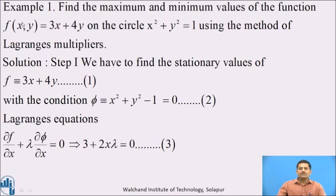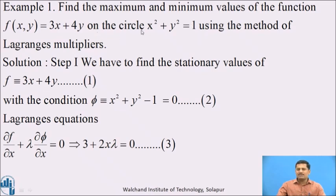Let us consider the first example: find the maximum and minimum values of the function f(x, y) = 3x + 4y on the circle x² + y² = 1 using the method of Lagrange's multipliers. In step number 1, the given function to be extremized is denoted by small f — equation number 1. The restriction is written in standard form as phi: x² + y² − 1 = 0 — equation number 2.